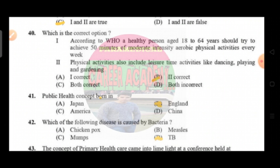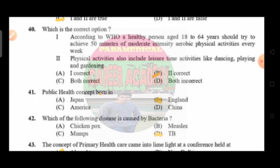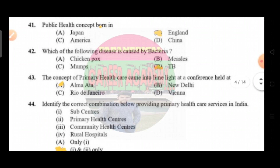Question number 40: which is the correct option. Option A — according to WHO, a healthy person aged 18 to 64 years should try to achieve 150 minutes of moderate intensity aerobic physical activity every week; option B — physical activity also includes leisure time activities like dancing, playing, and gardening. The correct answer is option B.